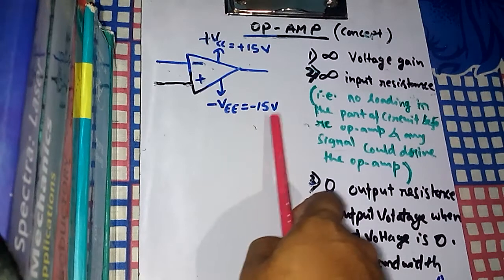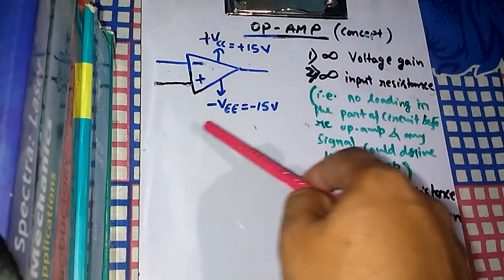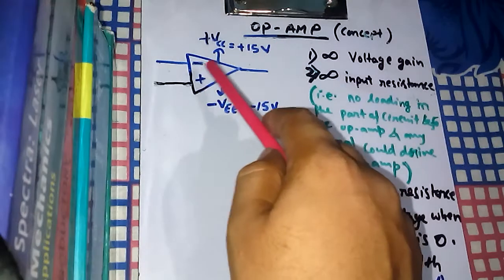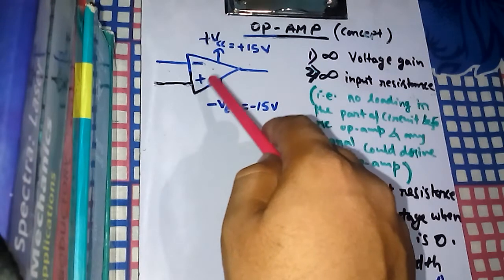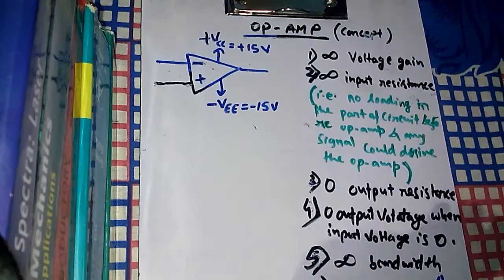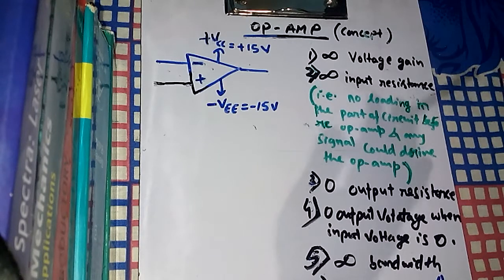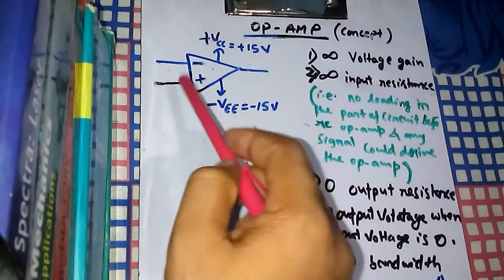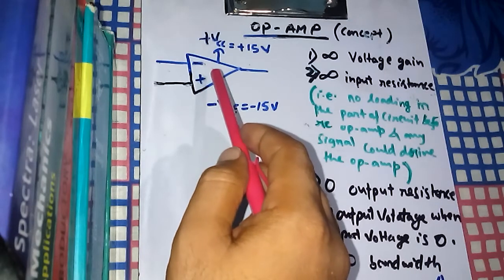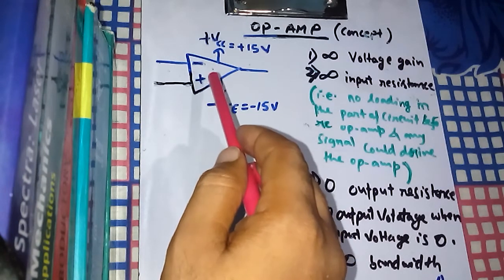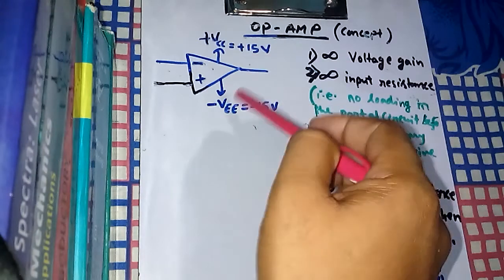Here we have +15V and -15V, also called +Vcc and -Vcc. These are external DC supply voltages used for biasing the capacitors inside the operational amplifier. A transistor cannot function if the capacitors are not properly biased with DC voltages. Our operational amplifier contains a large number of transistors, so it will not work if those capacitors are not properly biased.